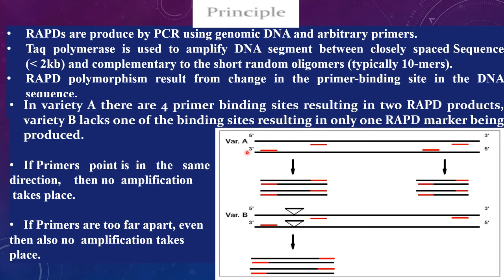In this picture, you can see that Variety A has four primer binding sites, resulting in RAPD products. In the case of Variety B, it lacks one primer binding site, resulting in only one RAPD marker being produced. If the primers point in the same direction, no amplification takes place. Even if the primers are too far apart, no amplification takes place.